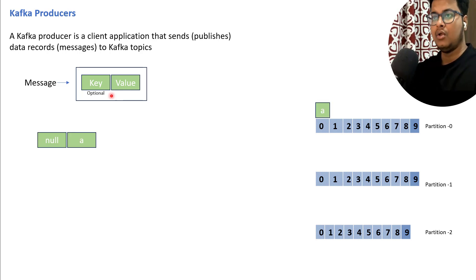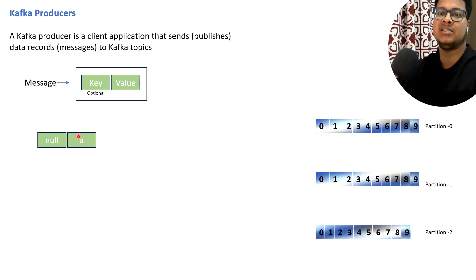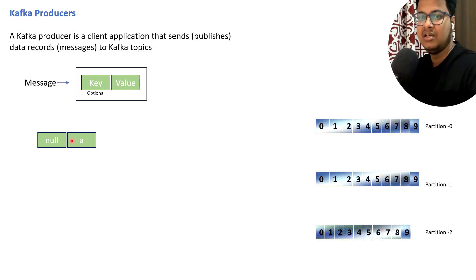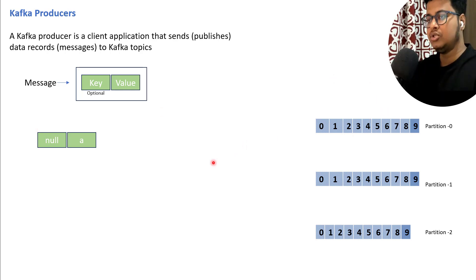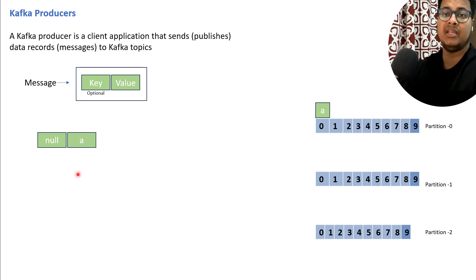So whenever you send any data — suppose for the first message I'm not sending any key, so it's just null. I'm just sending a message, but we cannot send it as a plain string. We have to serialize it because we have to send it as bytes, so we can use a string serializer. There are different serializers that exist. We serialize it, then we send the data to the Kafka topic. Since we did not provide any key, this can be stored in a round robin fashion to any partition. For this example, this goes to partition zero because there's no key.